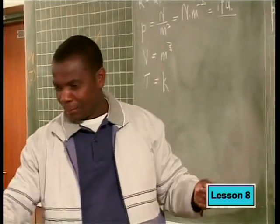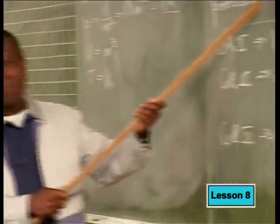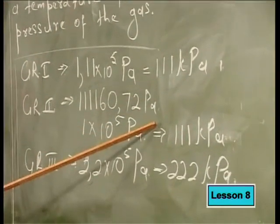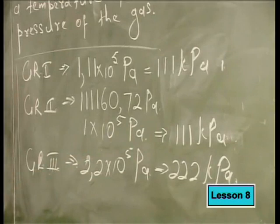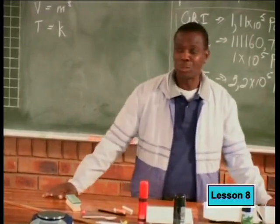Let's look at these answers. There is something interesting here. You worked the same problem, and two groups got the same answer while the other group got a different answer. What could be the problem? We seem to have a problem when converting the number of moles — some of us tend to forget that nitrogen is a diatomic molecule.